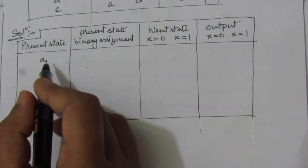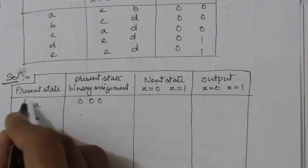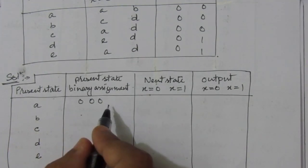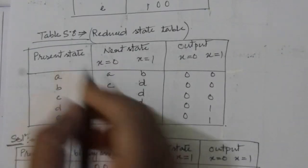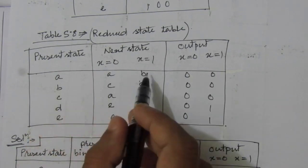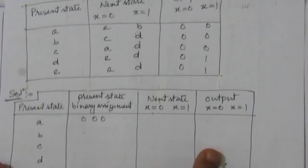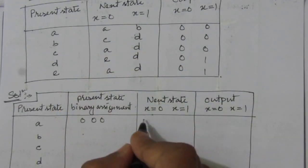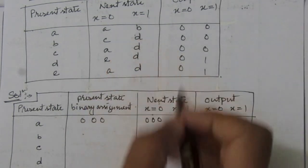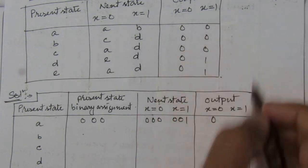Let us solve this problem now. First, for present state A, the binary assignment is 0, 0, 0. The next state when x equals 0 is the same state A, so its binary is 0, 0, 0, and the output is 0. When x equals 1, the next state is B, represented as 0, 0, 1, and the output is also 0.